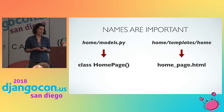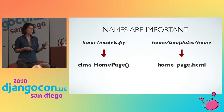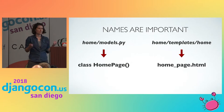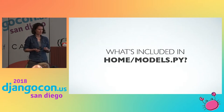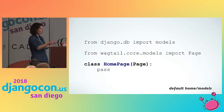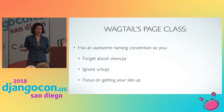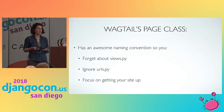So in your models, you'll see that you'll have a class called HomePage in title case. The last word of your class has to be page. Then you have a corresponding home_page template in snake case. And if you do these things correctly, a lot of magic happens. You get this really cool wagtail core models import Page, which is what you're going to inherit from. This awesome naming convention lets you forget about views — you don't have to write any URLs, and you can really just focus on making pages.